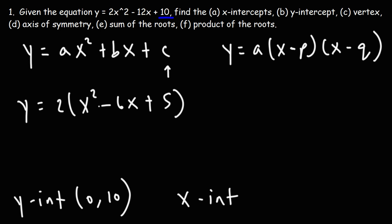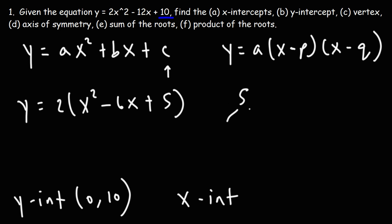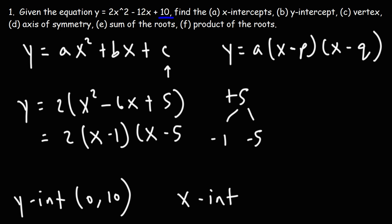Now to factor this trinomial where the leading coefficient is 1, I need to find two numbers that multiply to 5 but add to the middle coefficient, negative 6. That's going to be 1 and 5, but both are negative. Negative 1 times negative 5 multiplies to positive 5 and adds to negative 6. So factored, it's (x − 1)(x − 5).